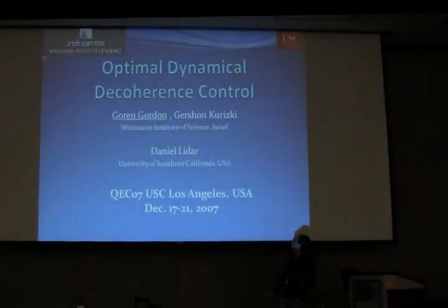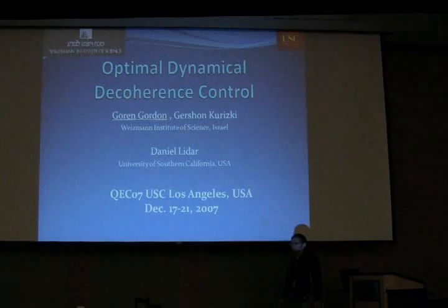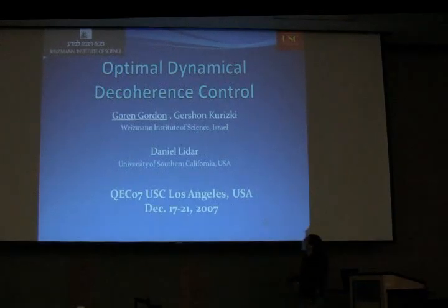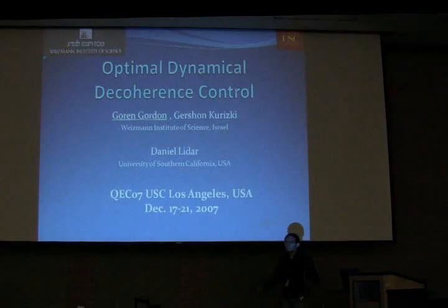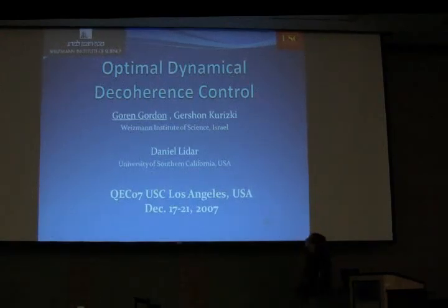I will talk about the optimal dynamical decoherence control. In the context of quantum error correction, this is a dynamical and active way to reduce the error per qubit so that hopefully it will be below the infamous threshold. So don't look for any codes or stabilizers — you won't find them, just dynamical decoherence control.